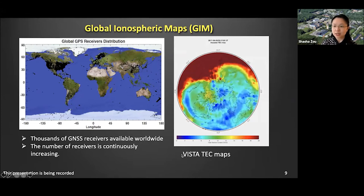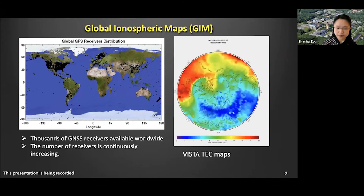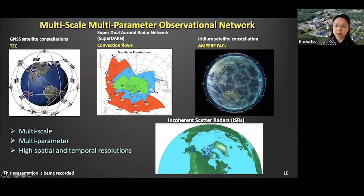During a geomagnetic storm, you can see dramatic plasma content changes in the northern hemisphere. Besides TEC from the GNSS network, we also have other types of distributed observational networks, such as convection flows from SuperDARN and field-aligned currents inferred from the Iridium satellite constellation, or the AMPERE project. Those three distributed observational networks provide us a way of looking at the larger-scale picture of the geospace system and how it responds to space weather events.